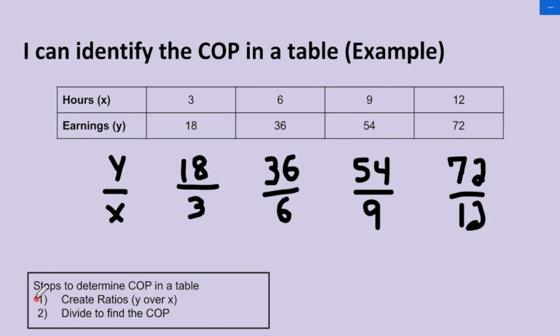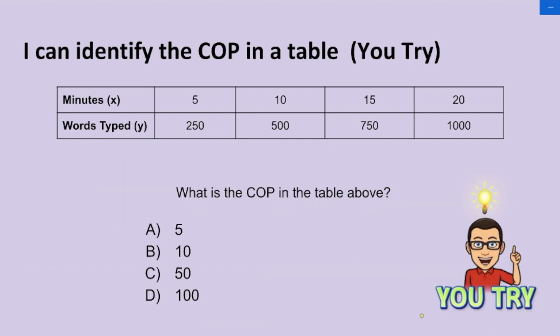So we're officially done with step one. And now we want to move on to step two, divide to find the COP. Because remember, this line in the middle lets us know to divide. So I want you to notice how for all of these ratios, they were all equal to 6. So we can determine that the COP based off of this table is going to be equal to 6.